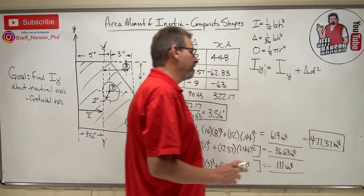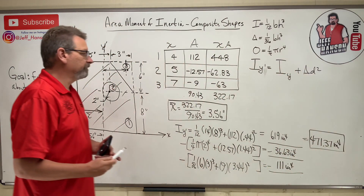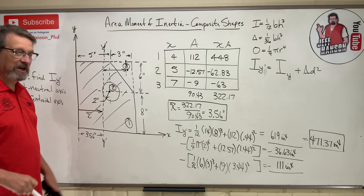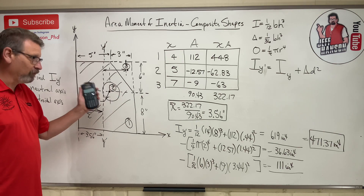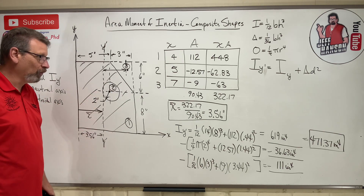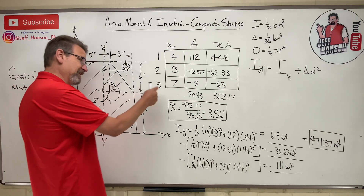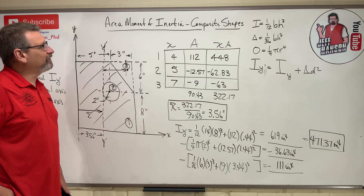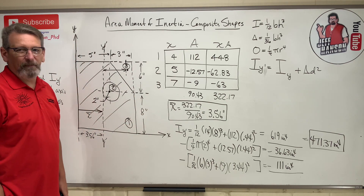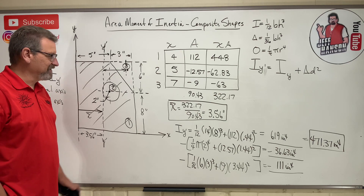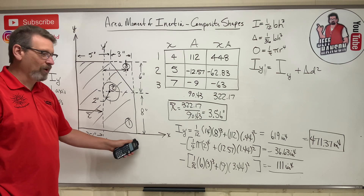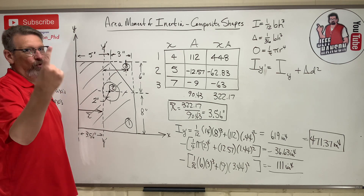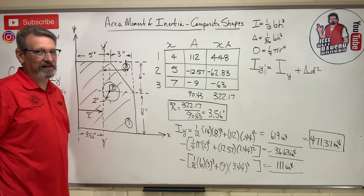And that's the moment of inertia for that shape. We had composite shapes with subtraction, and we had to find the centroid because the neutral axis wasn't given. That's about as complex a composite shape problem as you'll see on your exam — so now you know how to do it. One more video left — come on!